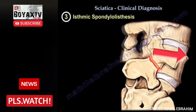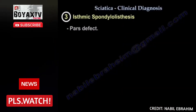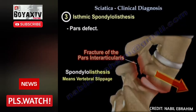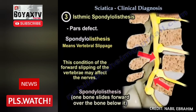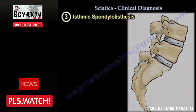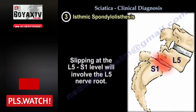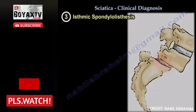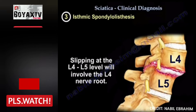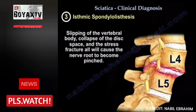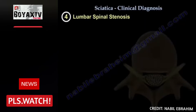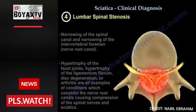The third cause is spondylolisthesis, where a pars defect allows one vertebral body to slip forward on another — a significant finding. If the slip occurs at L5-S1, the L5 nerve root is involved; if L4 slips on L5, there is L4 nerve root involvement. The slipping of the vertebral body, disc space collapse, and stress fracture can all cause the nerve to be pinched.